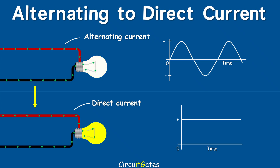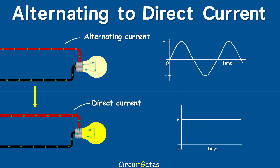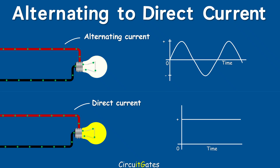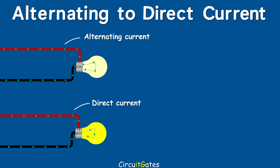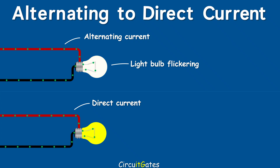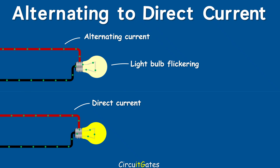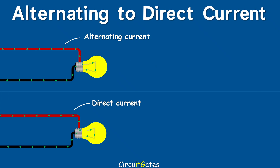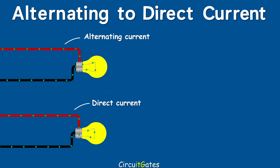In converting AC to DC, we are altering the voltage and current that change in magnitude and direction of flow to a steady and unidirectional voltage and current. On an AC circuit shown here, the light bulb is flickering due to varying magnitude of voltage and current. Why can't we see this in real life through the naked eye? Because AC is made to vary in magnitude so fast, but this is what happens in AC.